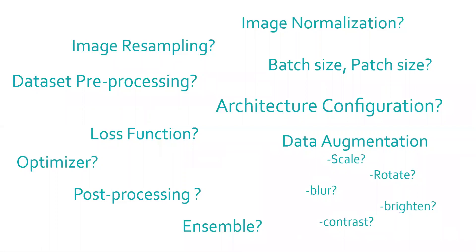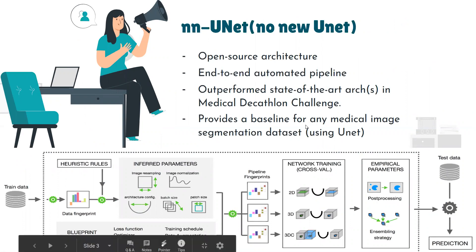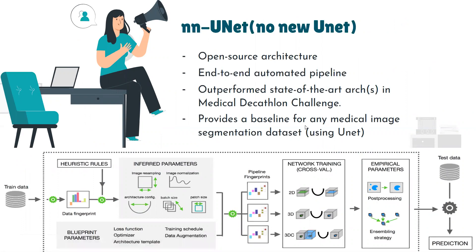What if I tell you, for medical image segmentation, you have an automated pipeline which can do this for you? Yes, nnUNet is an open source architecture which provides an automated end-to-end pipeline for medical image segmentation. It basically takes in the training data and creates a fingerprint for it, which consists of the combination of the best hyperparameters which could be used.